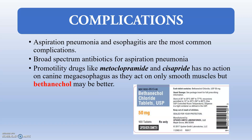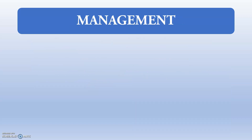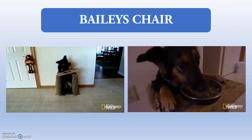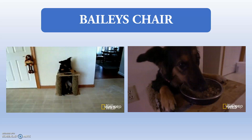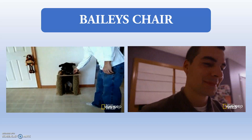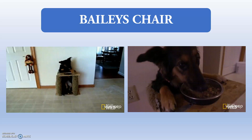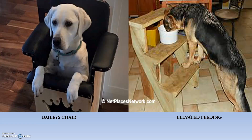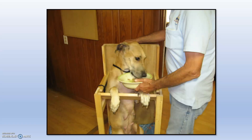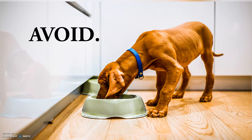The best management option is the Bailey's chair. Once the animal is familiarized with the Bailey's chair it will be happy to get in and eat. The chair is customized according to the animal's size, body weight, and conformation, providing an elevated feeding position. Avoid low-level feeding, as the elevated posture helps food move down into the stomach by gravity.